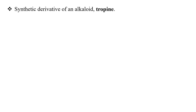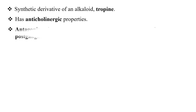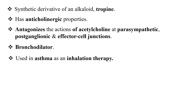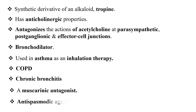Ipratropium bromide is a synthetic derivative of the alkaloid tropine and it has anticholinergic properties. It antagonizes the actions of acetylcholine at the parasympathetic post-ganglionic and effector cell junctions. It is used as a bronchodilator, in the treatment of asthma as an inhalation therapy, in the treatment of chronic obstructive pulmonary disease, in chronic bronchitis, as a muscarinic antagonist, and as an antispasmodic agent.